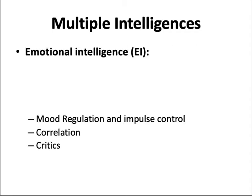Another form is emotional intelligence, a form of social intelligence that emphasizes the abilities to manage, recognize, and understand emotions, and to use emotions to guide appropriate thought and action. This includes regulating moods, resisting impulses and temptations, and controlling behaviors. Emotional intelligence is correlated with the quality of social relationships, though some critics have questioned whether it really is a type of intelligence or whether it stretches the definition too far.